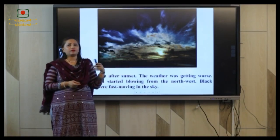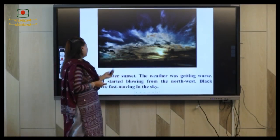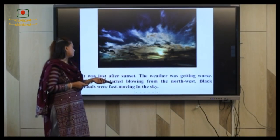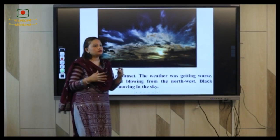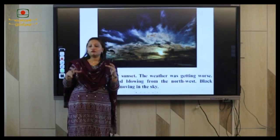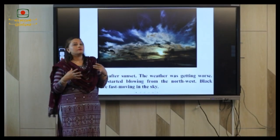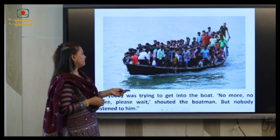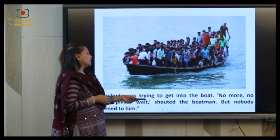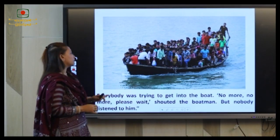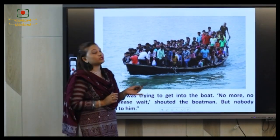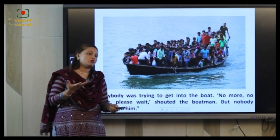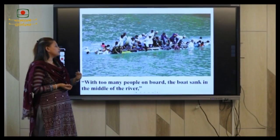We can see the types of clouds that happen over our sky in summer. It was just after sunset — the weather was getting worse. The wind started blowing from the northwest. Black clouds were fast moving in the sky. When it is around noon, the weather and surroundings can become dark and stormy because of the clouds. This is a real picture of the ferry boat in the village. Everybody was trying to get into the boat, and the boatman said 'No more, no more, please wait!' but nobody listened because everyone was in a hurry to get home before the weather got worse. With too many people on board, the boat sank in the middle of the river.